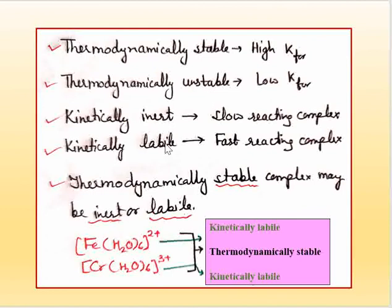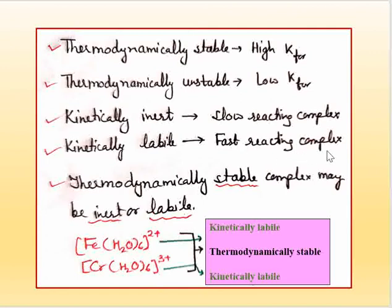If we talk about kinetic inertness and kinetic stability: complexes which are kinetically inert are slow-reacting complexes, and their substitution reactions are slow. Complexes which are kinetically labile are fast-reacting complexes, and their substitution reactions are very fast.